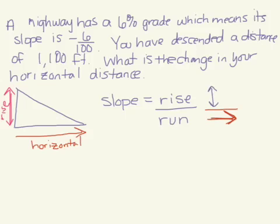They tell us that with a 6% grade, that means our slope is negative 6 over 100. So we descend 6 feet for every 100 feet that we move horizontally. They said if we've descended a distance of 1100, so that's telling us the rise part.